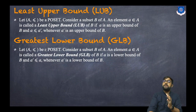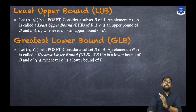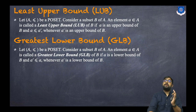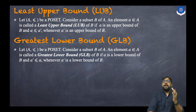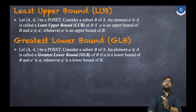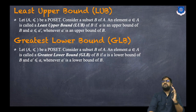Now the Greatest Lower Bound: in the same manner, let a ≤ b. Consider a subset B of A. An element a belonging to A is called a Greatest Lower Bound, or GLB, of B if: first, a is a lower bound of B, and second, a' ≤ a whenever a' is a lower bound of B. Forget about all these definitions — we will discuss in examples how to find LUB and GLB.